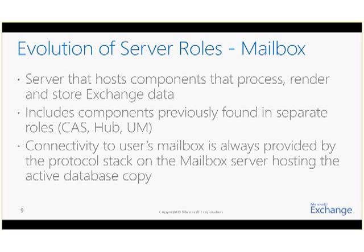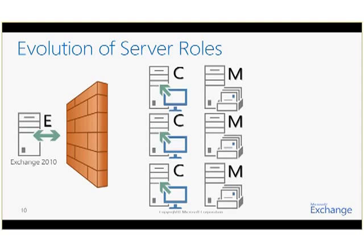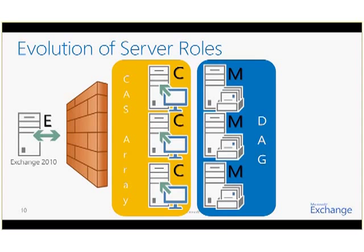A key principle of the new architecture is that access to a user's mailbox is always provided by the protocol stack on the mailbox server hosting the active copy of their mailbox database. In Exchange 2010, session affinity to the client access server role was required for several protocols. In Exchange 2013, client access and mailbox components reside on the same mailbox server, so session affinity is not required on the client access servers. You can add mailbox servers to a database availability group (DAG) and multiple client access servers to a client access server array. DAG members can be in different sites for site resilience.